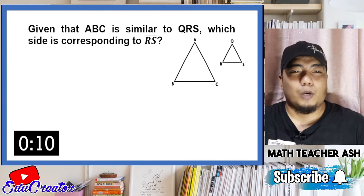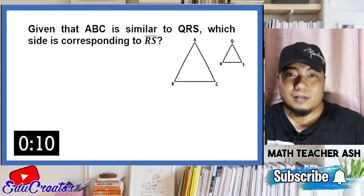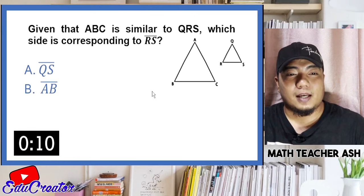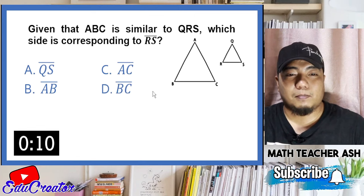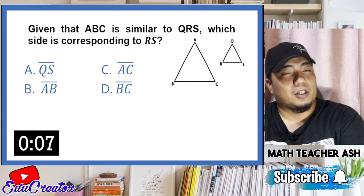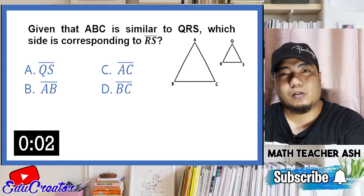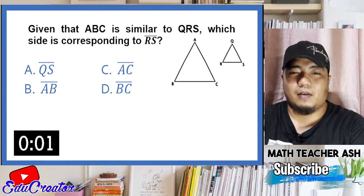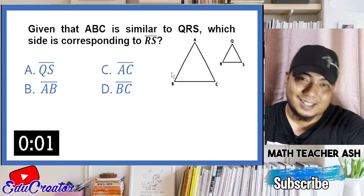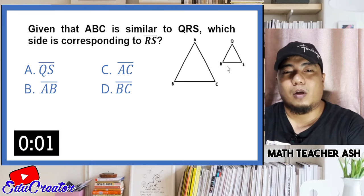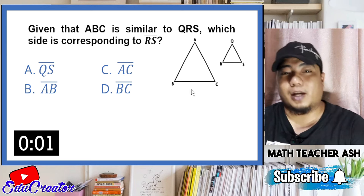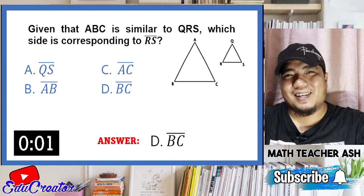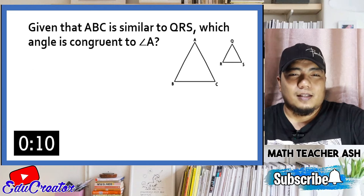Given that triangle ABC is similar to triangle QRS, which side is corresponding to side RS? Is it A side QS, B side AB, C side AC, or D side BC? The technique is placement: RS is the base of triangle QRS, so the corresponding side is the base of triangle ABC, which is BC. The answer is letter D. Next: which angle is congruent to angle A? Angle A is at the top of its triangle, so the corresponding angle is at the top of the other triangle — that is angle Q, letter B.